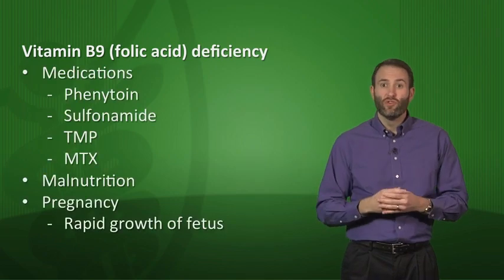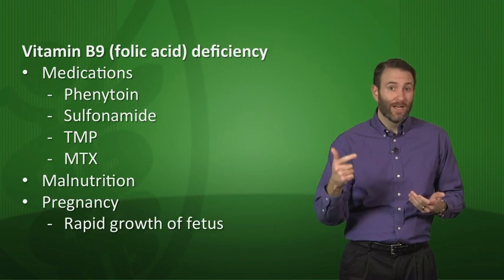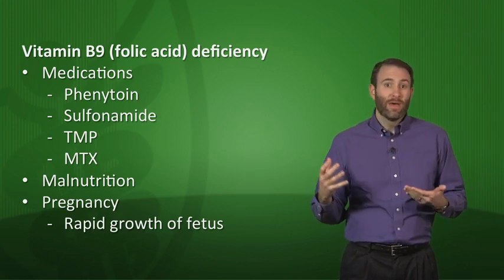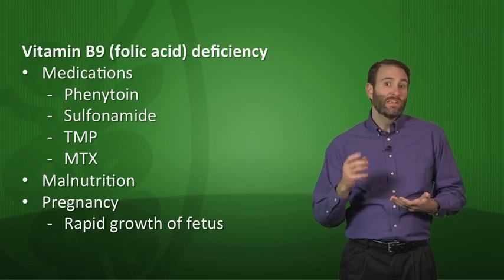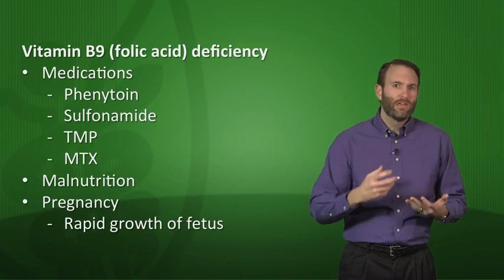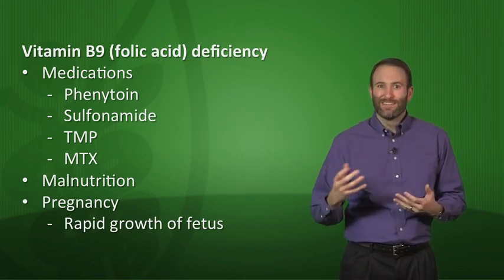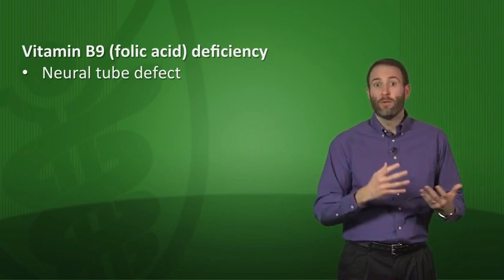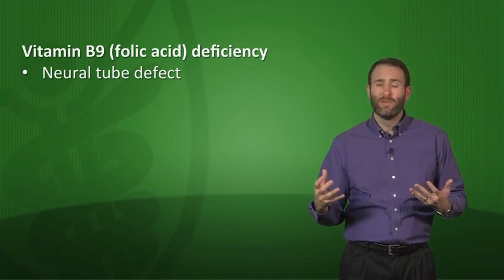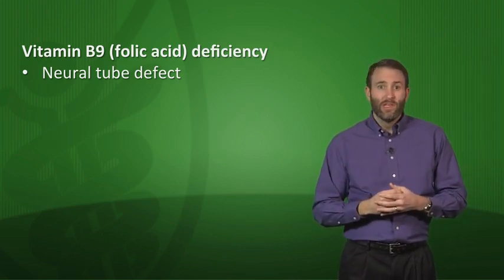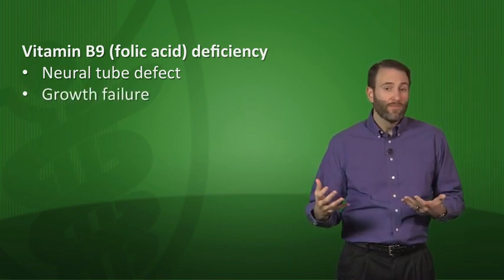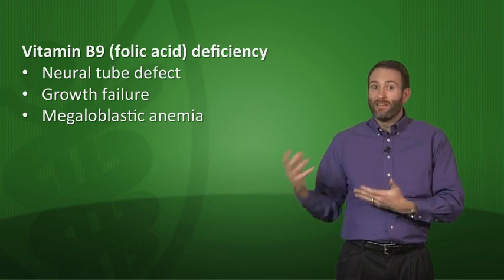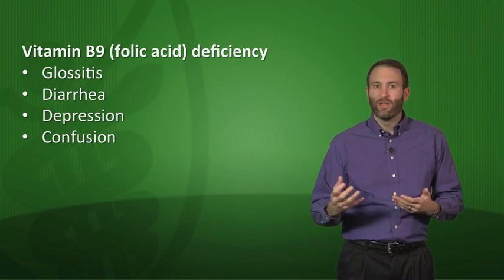Folic acid deficiencies are most often due to medications or malnutrition. Drugs like phenytoin, sulfonamides, trimethoprim, and methotrexate can all cause folic acid deficiency, and you can counteract many of these effects with supplemental folic acid. Folic acid can also be low in pregnancy due to rapid fetal growth. A folate deficiency in utero can cause neural tube defects — the most common cause of neural tube defects — which is why supplementing folate even before pregnancy is critical. Folate deficiency during growth causes growth failure, and in adults or children causes megaloblastic anemia, as well as nonspecific findings like glossitis, diarrhea, depression, and confusion.